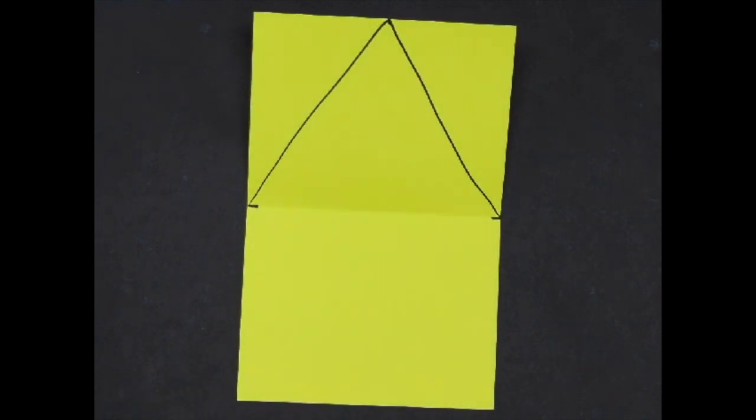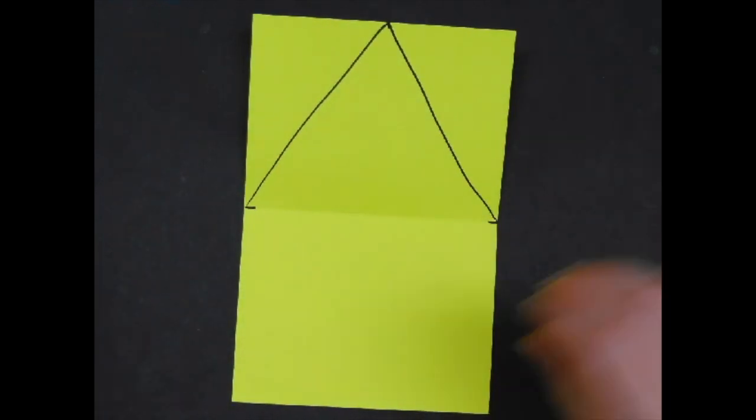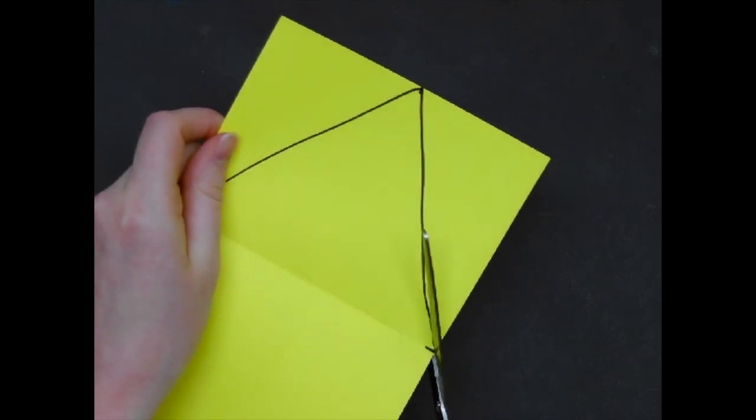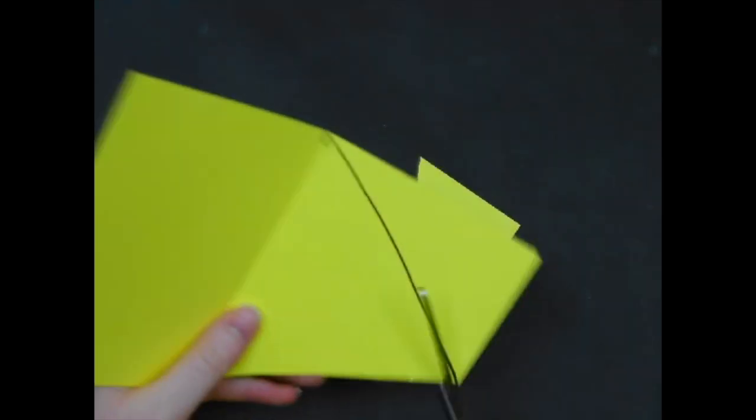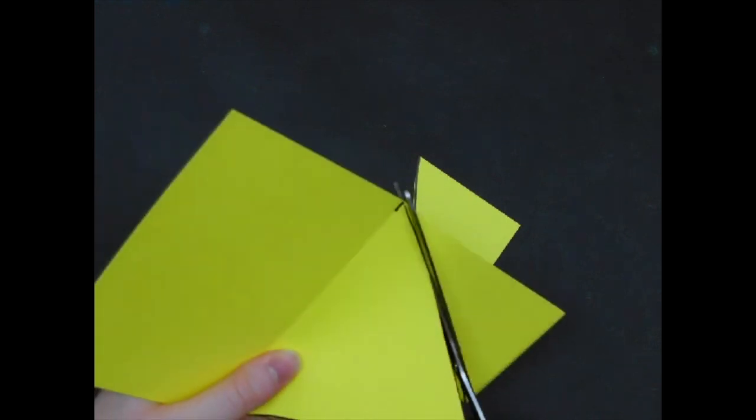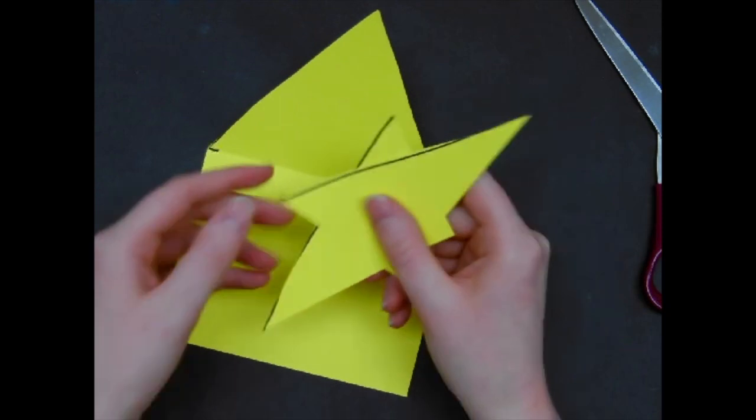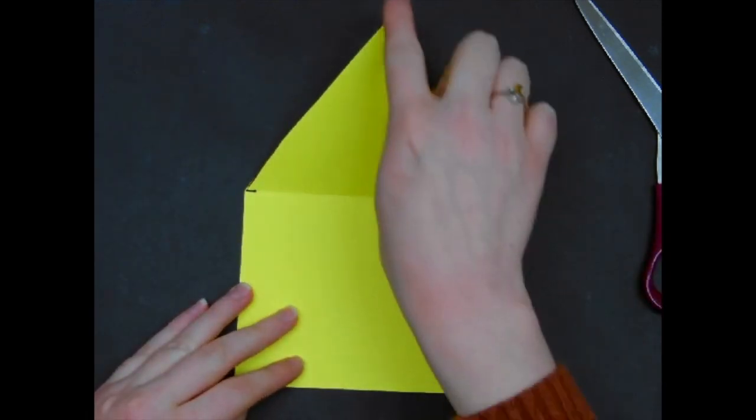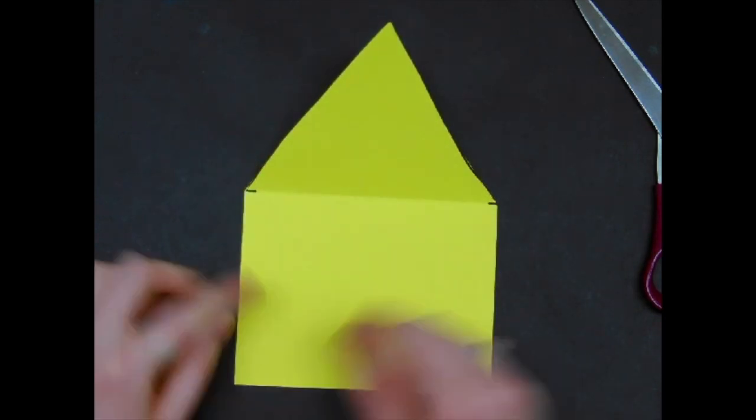We're going to set the pencils to the side and I'm going to pass out some scissors. With the scissors, I want you to cut along those black lines. We're going to hang on to these extra pieces, so set them to the side for now. This is going to be the top part of your cupcake that we're going to cover with frosting.